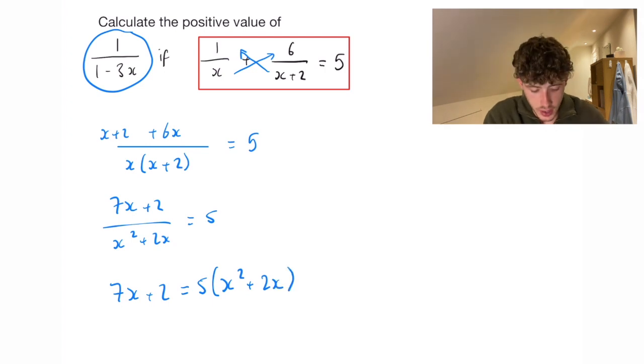And if we expand that bracket, we're going to get 7x plus 2 on the left hand side still and 5x squared plus 10x on the right hand side.